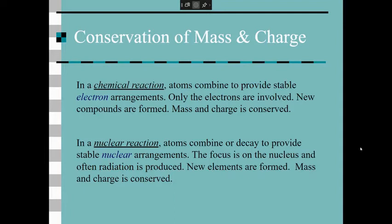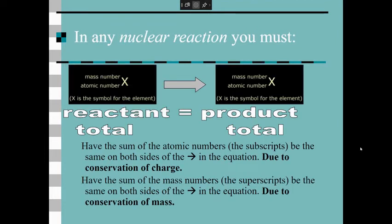In all of these things, mass, charge, and energy are all conserved. It's going to be the same thing we did when we balanced chemical equations. You're going to have reactants on the left-hand side of the yield sign, products on the right-hand side. The sum of the atomic numbers — the bottom numbers — have to be the same on both sides. That's the law of conservation of charge. The mass numbers — the top numbers — have to be the same also, due to the law of conservation of mass.